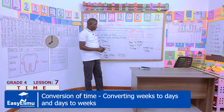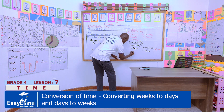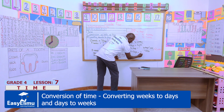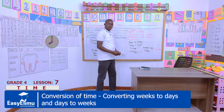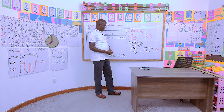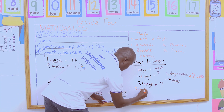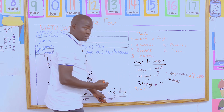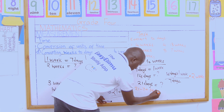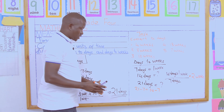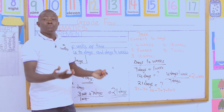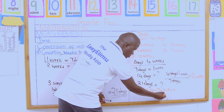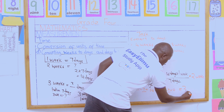We are converting days to weeks. Can we try 21 days — they amount to how many weeks? If seven days are equal to one week, 21 days will equal what? You can use repeated subtraction: 21 minus 7 equals 14, then 14 minus 7 equals 7, then 7 minus 7 equals 0. How many times have we subtracted 7? We have 1, 2, and 3. So 21 days is equivalent to 3 weeks.